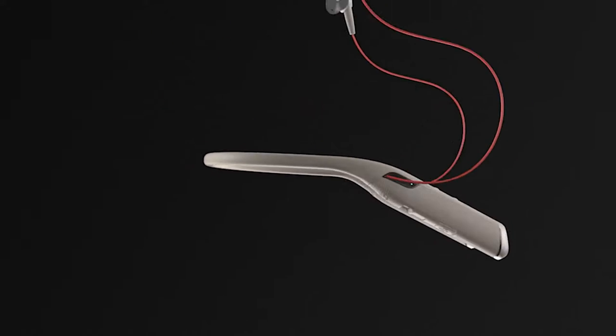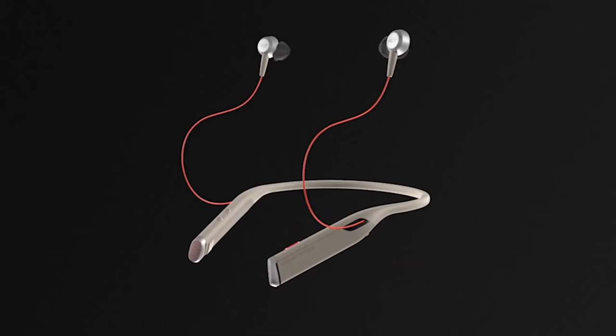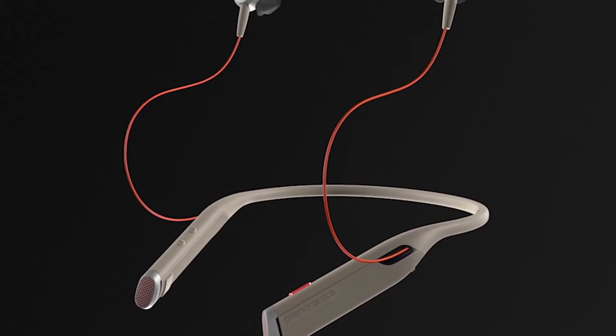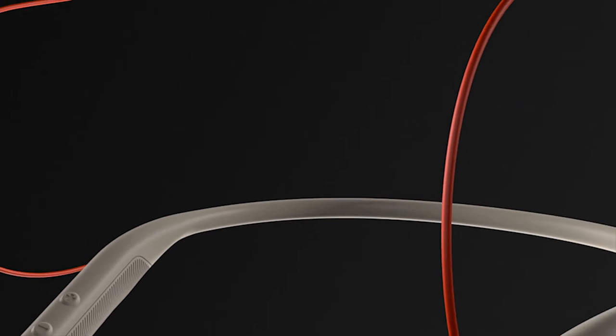To customize your settings and update the firmware, download Plantronics Hub for desktop or mobile use at Plantronics.com/software. You're now ready to enjoy your Voyager 6200 UC headset from anywhere. For more information visit Plantronics.com.